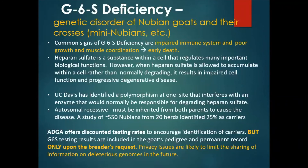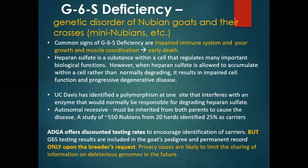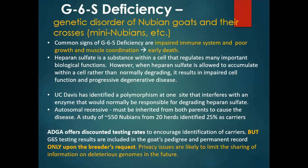G6S deficiency is a genetic disorder of Nubian goats and their crosses. The common signs of G6S deficiency are impaired immune system, poor growth, and muscle deterioration leading to early death. These animals rarely live beyond six months of age, though some can live to be almost four years of age. Heparin sulfate is a substance within a cell that regulates many important biological functions. However, when heparin sulfate is allowed to accumulate within a cell rather than normally degrading, it results in impaired cell function and progressive degenerative or wasting disease. UC Davis has identified a polymorphism at one site that interferes with an enzyme normally responsible for degrading heparin sulfate.